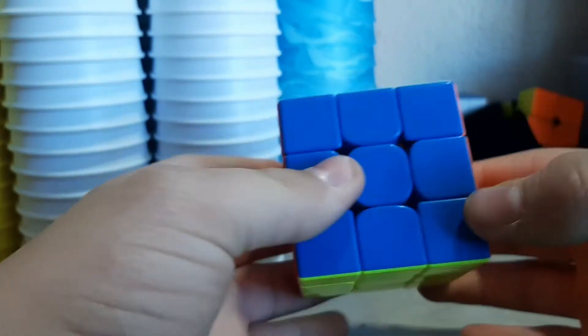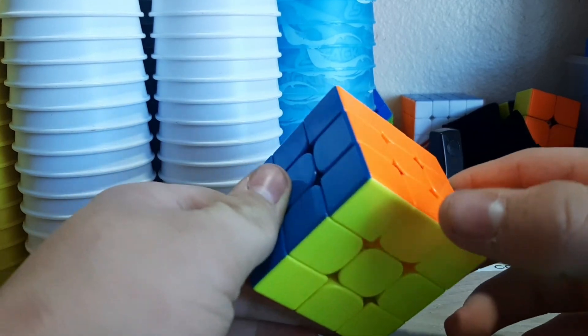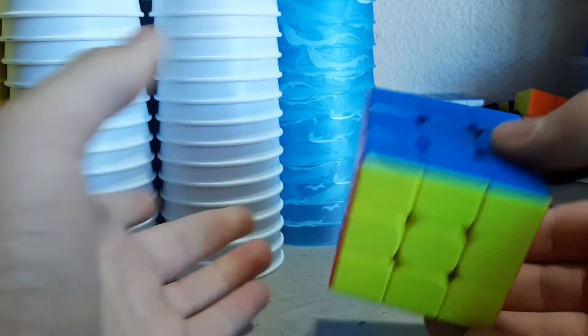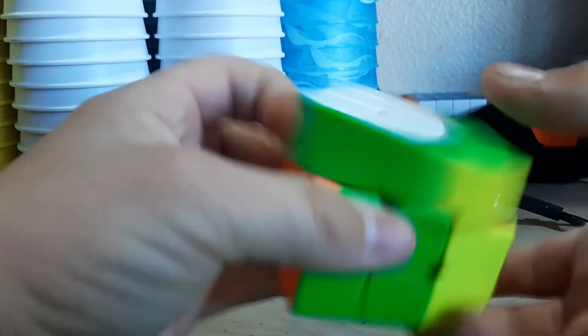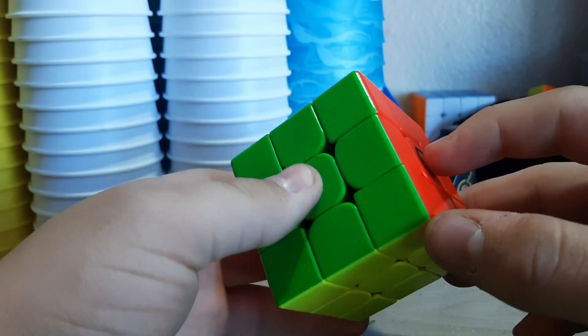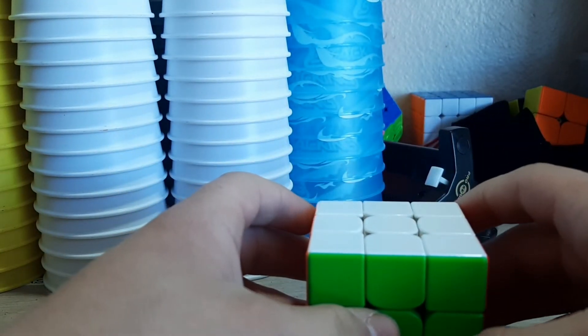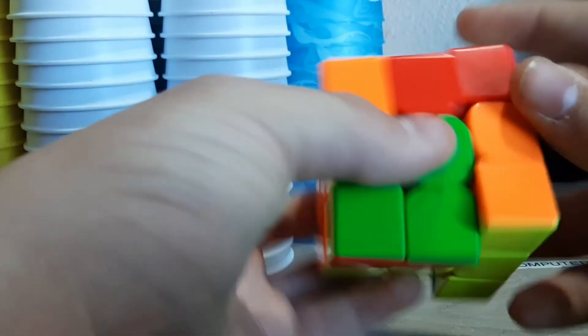That's kind of cool. I'll have the scramble in the description. That's an insane solve. I don't know how I beat my 4.41, but if it wasn't a last layer skip it wouldn't have been beaten. So I got a three second solve, what the heck!